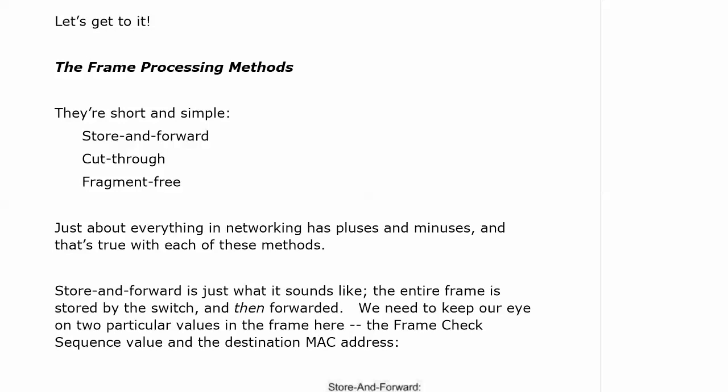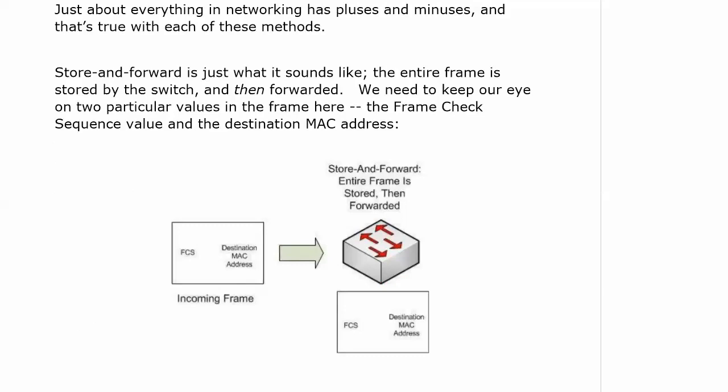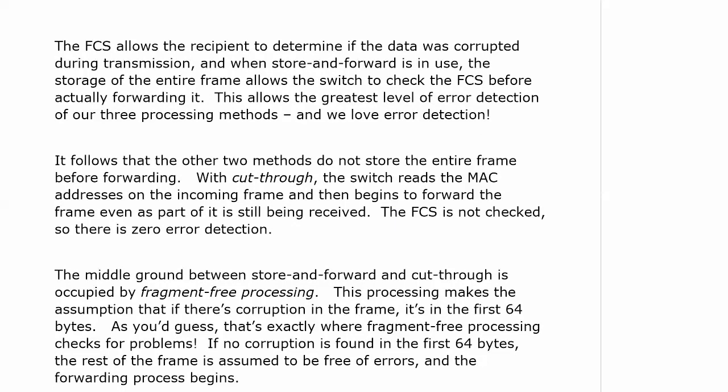Store and forward — the entire frame is stored by the switch and then forwarded. We need to keep our eye on two particular values in the frame: the FCS, the frame check sequence value, and the destination MAC address. The FCS allows the recipient to determine if the data was corrupted during transmission, and when store and forward is in use, the storage of the entire frame allows the switch to check the FCS before actually forwarding the frame.